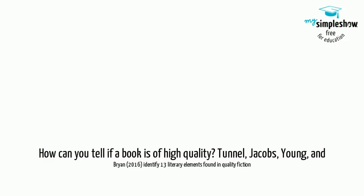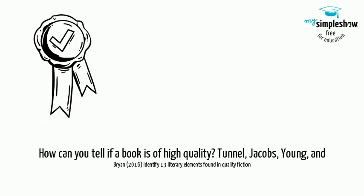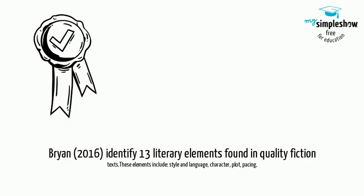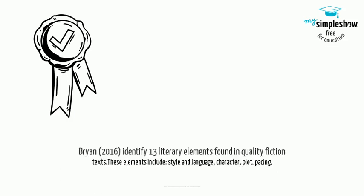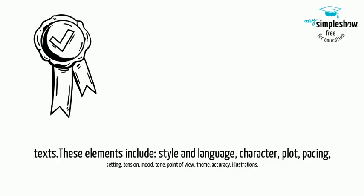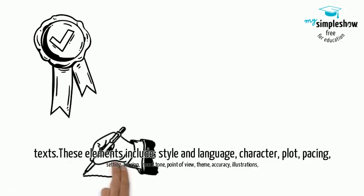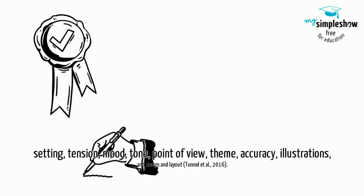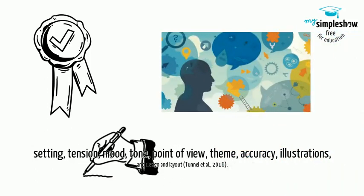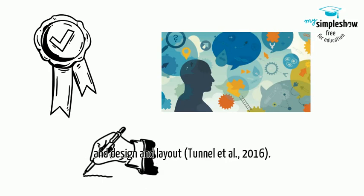How can you tell if a book is of high quality? Tunnel, Jacobs, Young, and Brian (2016) identify 13 literary elements found in quality fiction texts. These elements include style and language, character, plot, pacing, setting, tension, mood, tone, point of view, theme, accuracy, illustrations, and design and layout.